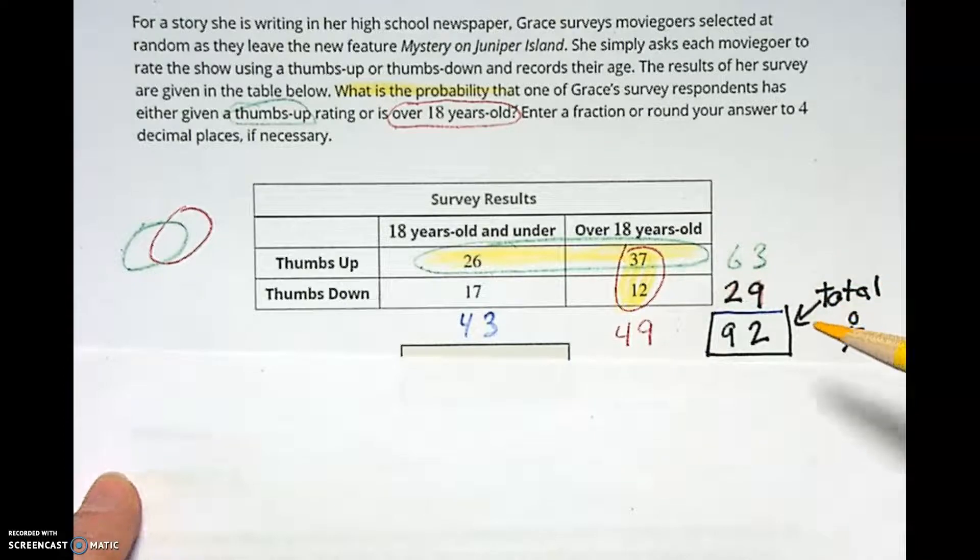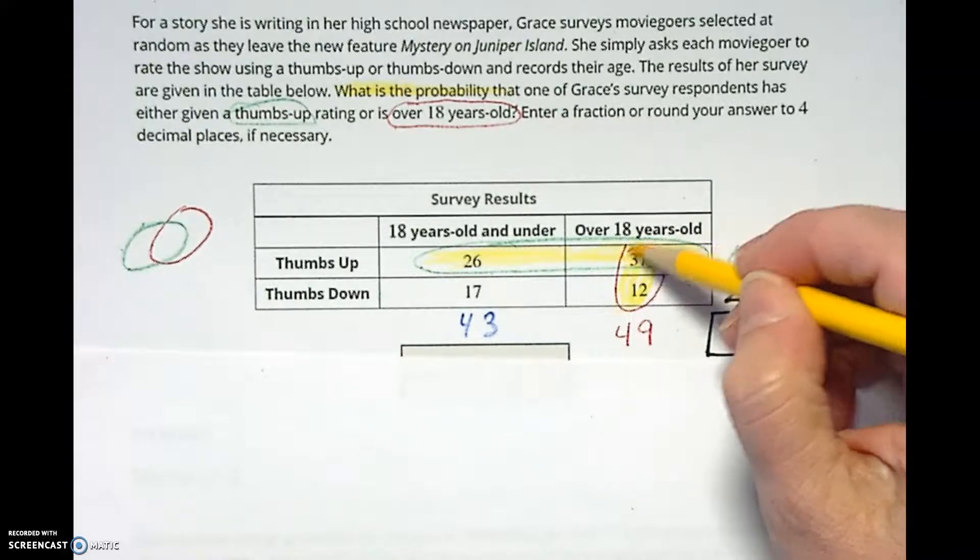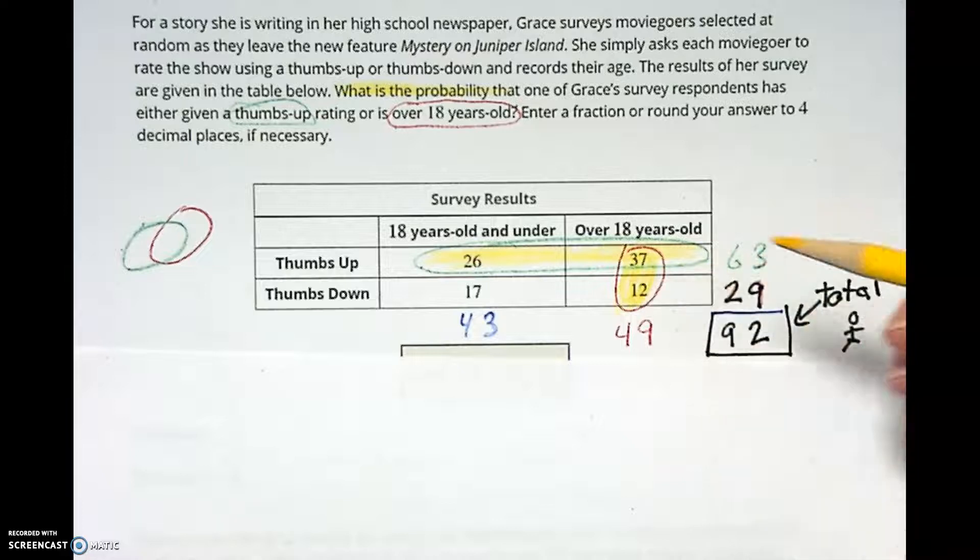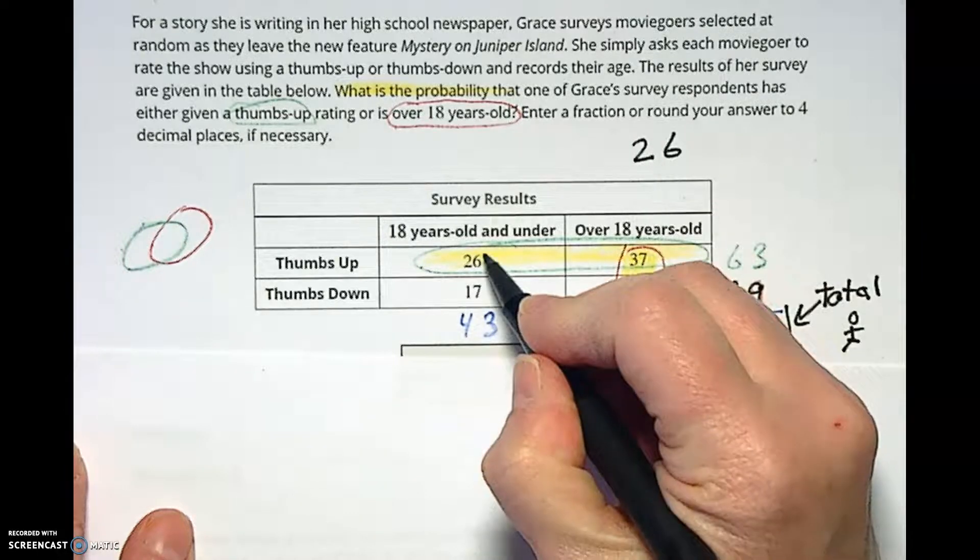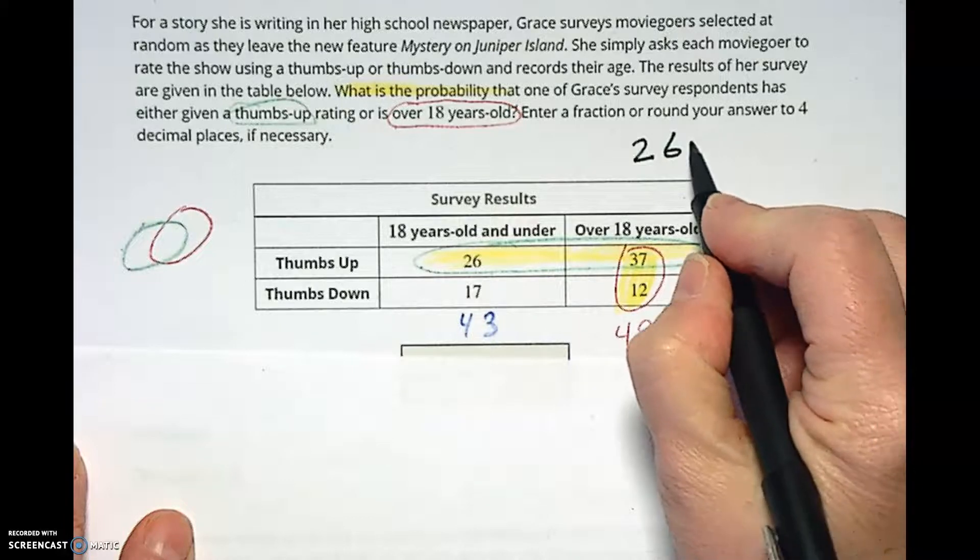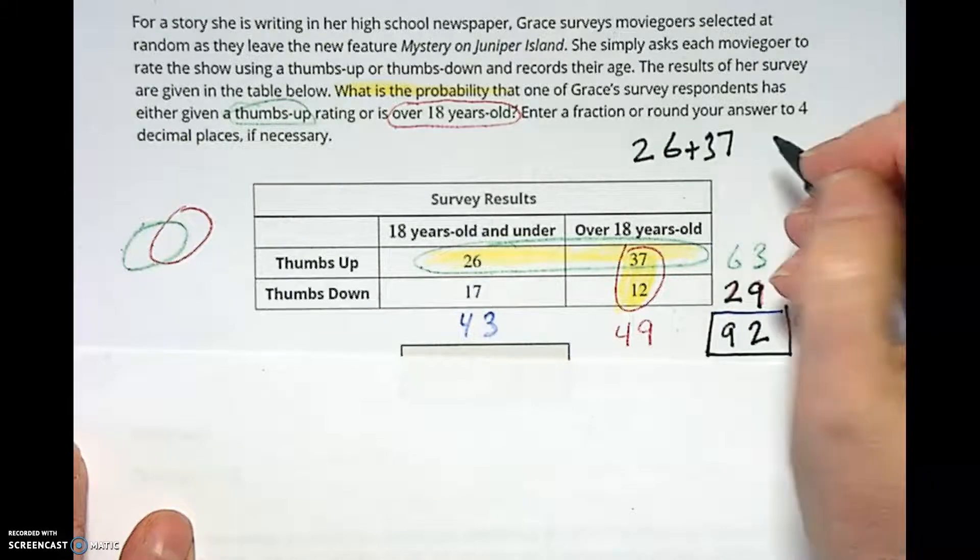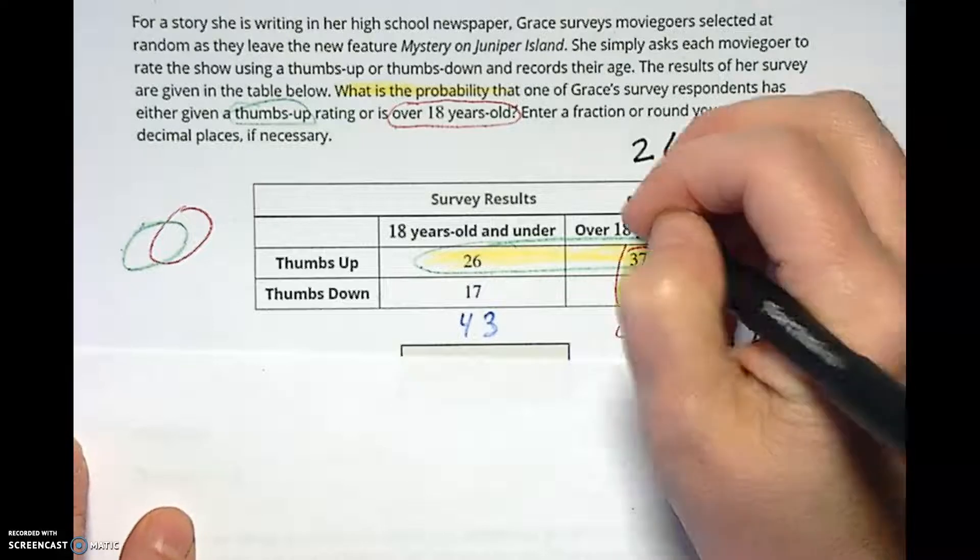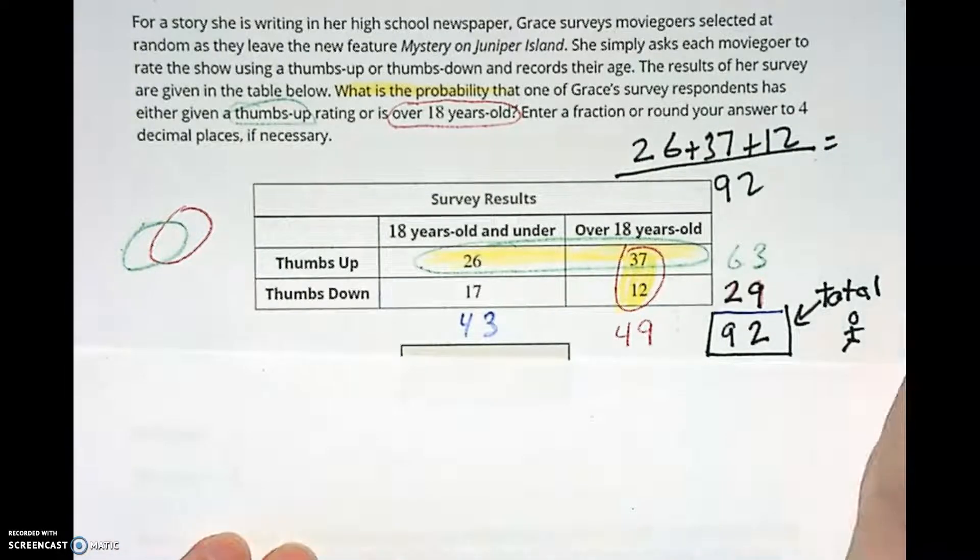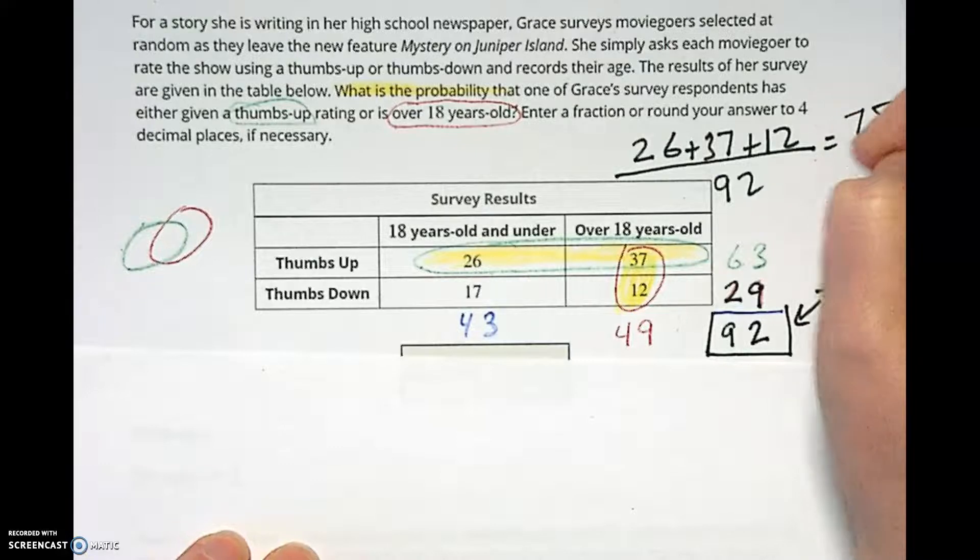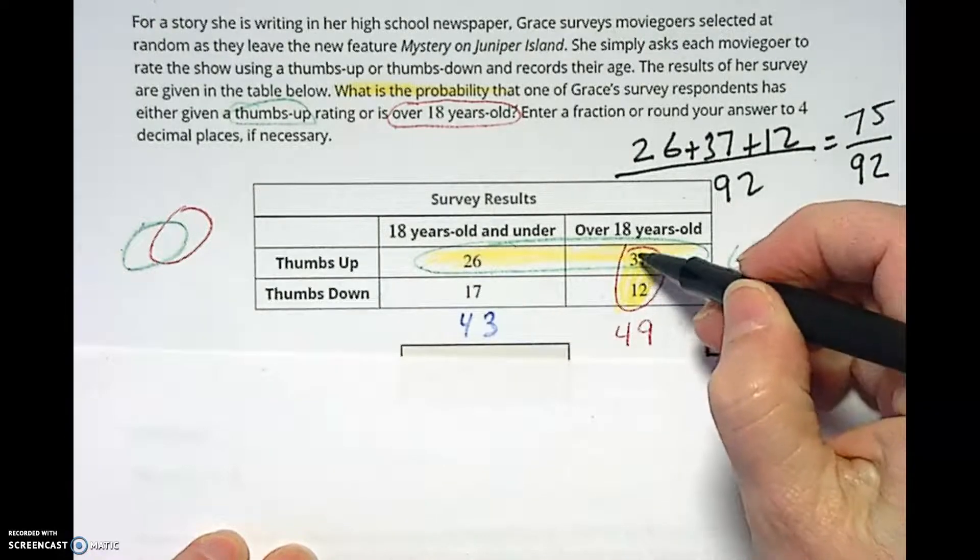So we have to add all those up. You can either do the 63 plus the 49 minus the 37 because so you wouldn't count it twice if you're thinking back at Venn diagrams. Or what I would probably actually just do is I would just add them all up. I'd do 26 of the 18 and under that gave the thumbs up, plus the 37 who were over 18 and gave the thumbs up, plus the 12, all together, all over the total number of people which was 92. So we would get 75 out of 92 people are either thumbs up people or over 18 people or both, and we did not double count that.